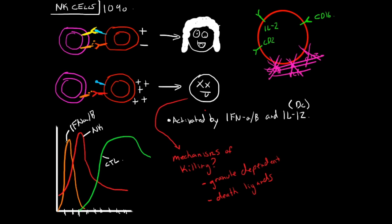As we can see, interferon alpha and beta goes up first. Right after that, natural killer cell activity goes up. As interferon levels come down, natural killer cells stay up for a little bit, then start to go down. Then there's a really late response from the cytotoxic T lymphocytes. The natural killer cells induce cytotoxic T lymphocyte activity because of their IFN gamma production.